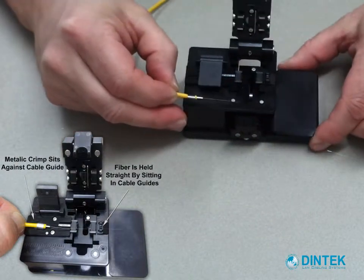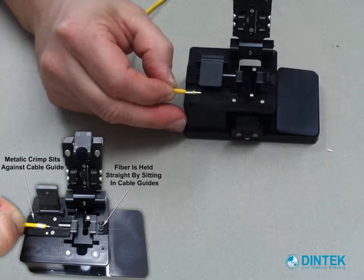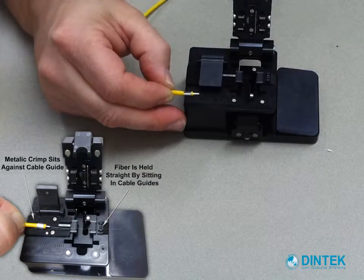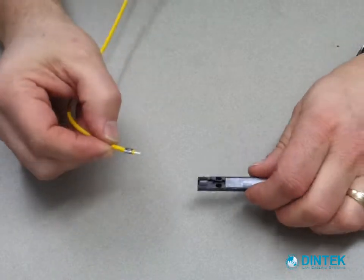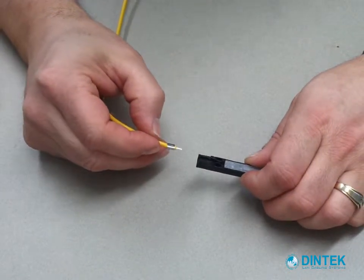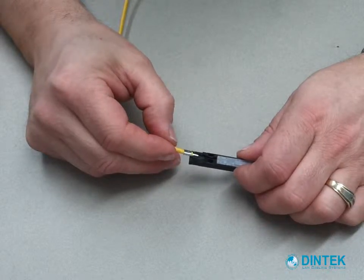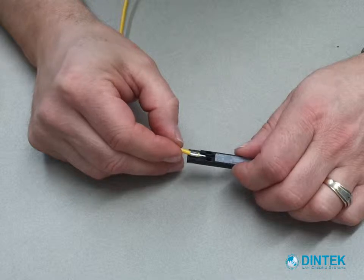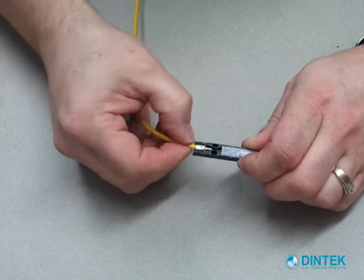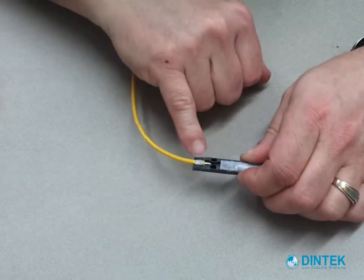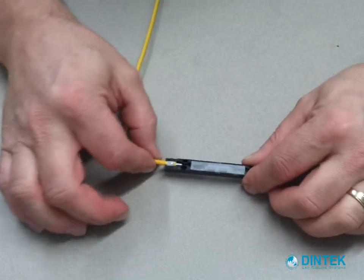So that fiber is now ready to insert into the splice. We will take our splice and insert that in. Nice and easy, don't want to force it in. That should sit in place there. The crimp then sits into the special groove in there which will hold the fiber in place.